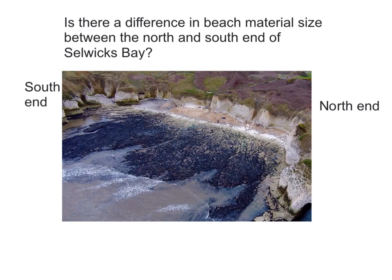So let's go to North Yorkshire and investigate this particular beach in Selwick's Bay. And our investigation is simply this: Is there a difference in beach material size between the north and the south end of Selwick's Bay? So you collect beach material data and you want to see if there's a difference in size. You've got spatial pattern and you've got categories. Chi-squared will help you work out if there is a difference.